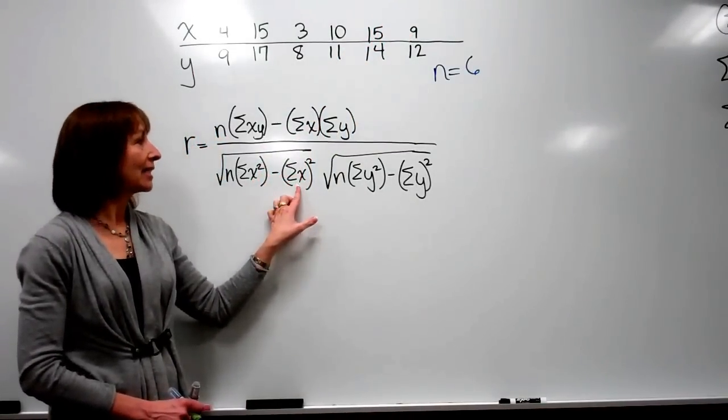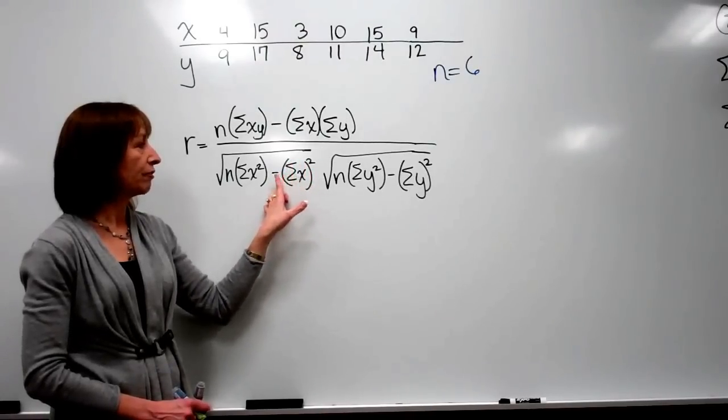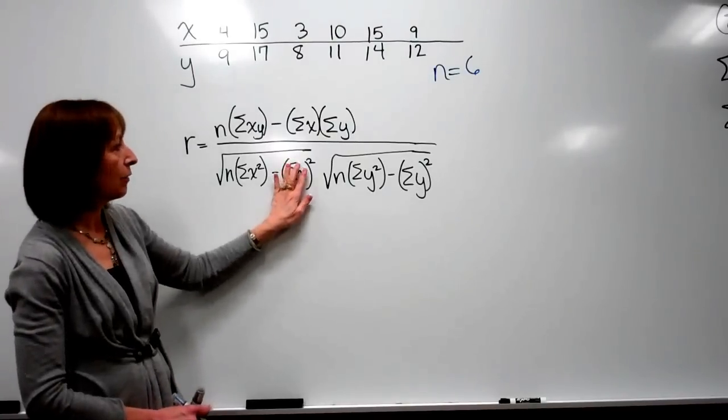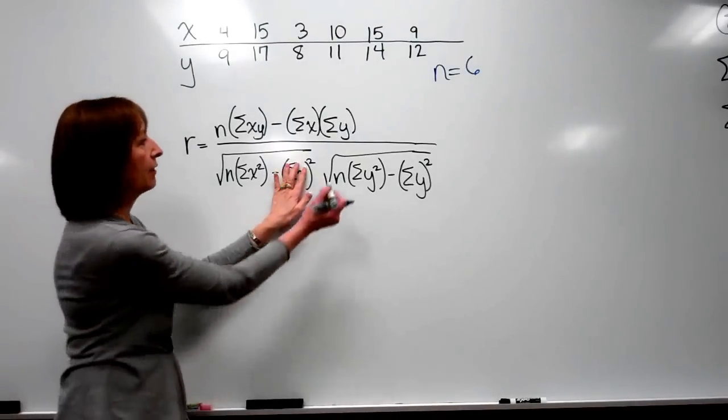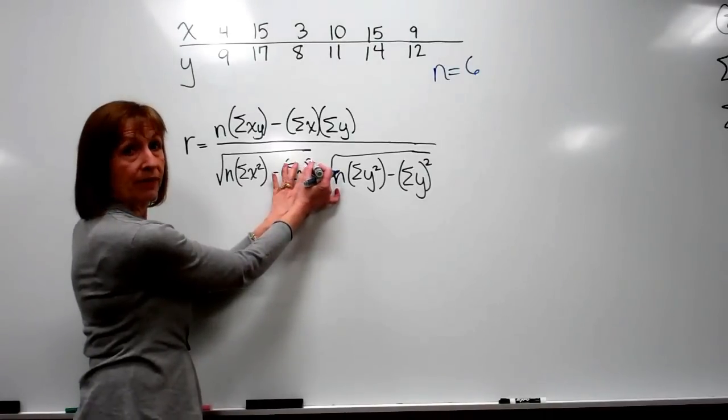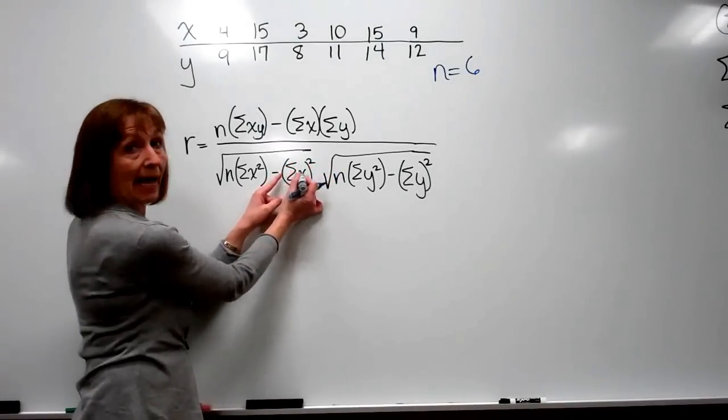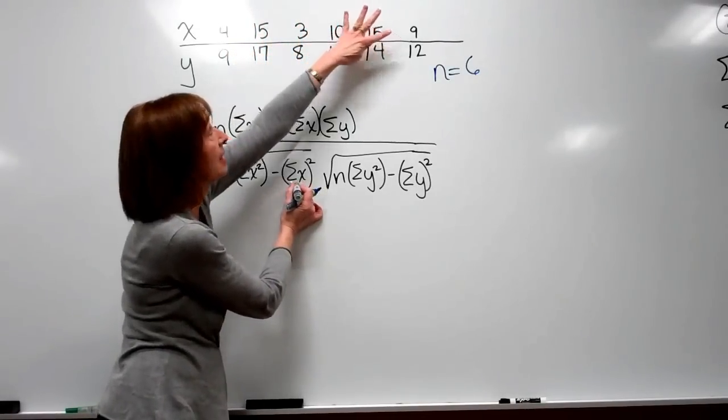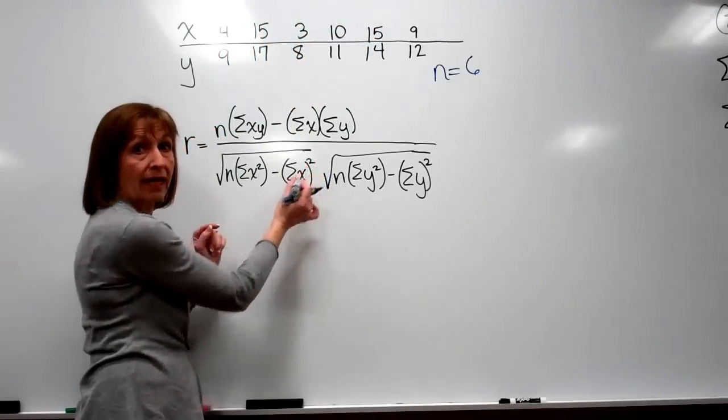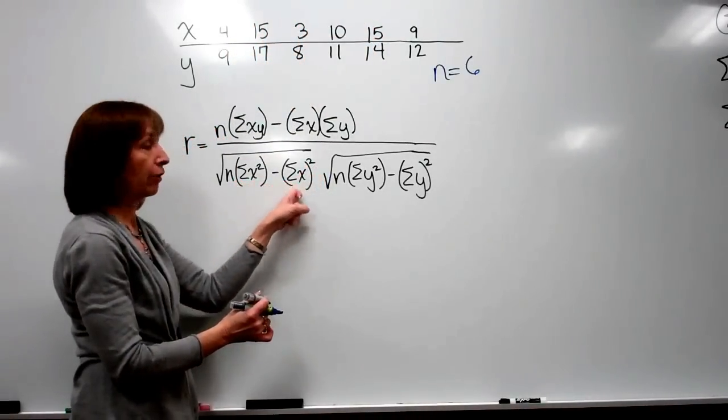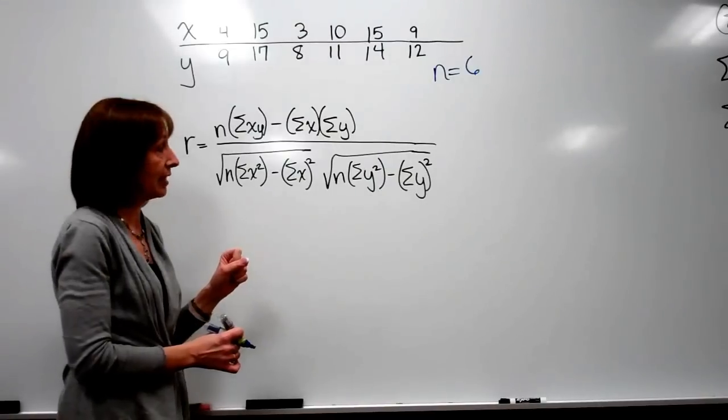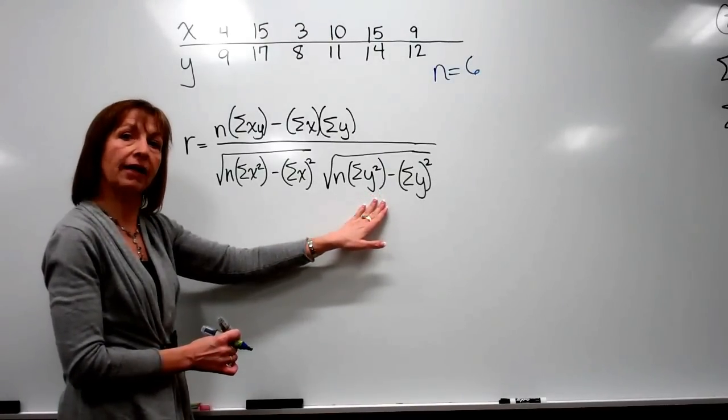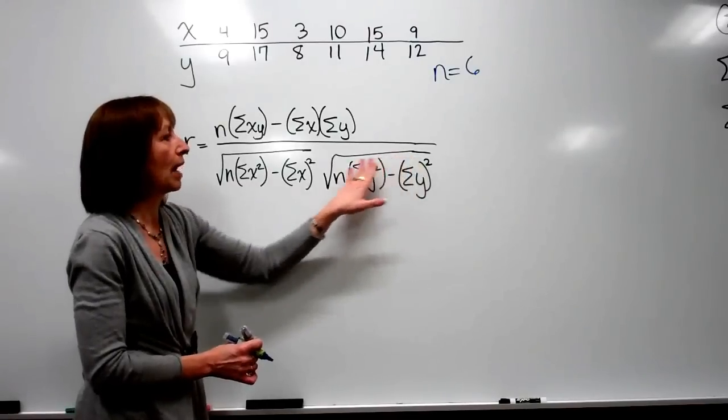In the next expression following the minus sign, notice how I have the summation of the x, which is in parentheses, and then the squares on the outside of the parentheses. Here I want to add up all the x's, so take 4 plus 15 plus 3 plus 10 plus 15 plus 9, and then square that total. So you have to be really careful about the subtle difference there. And then the same thing under the square root of the second factor in the denominator just with the y letters.